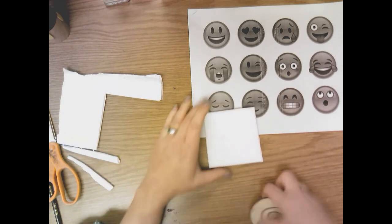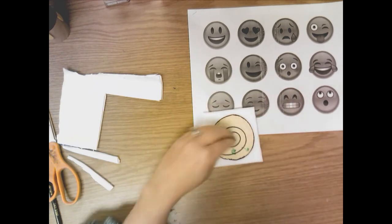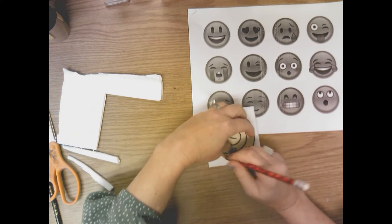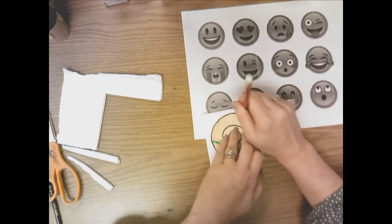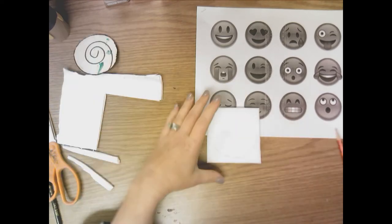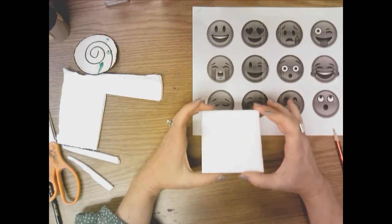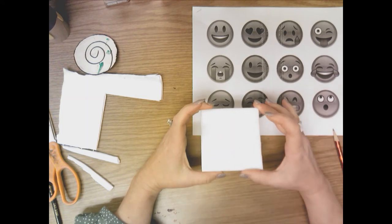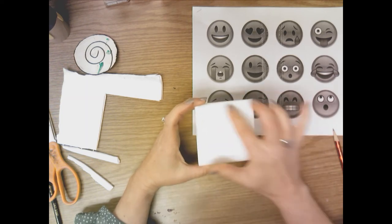And then you're going to take the circle pattern, place it in the center of the square and gently trace around it with your pencil. Not pressing too deep in there just so that you can see that circle. And I feel like on the screen it's kind of hard to see with the lighting, but there is a circle there.